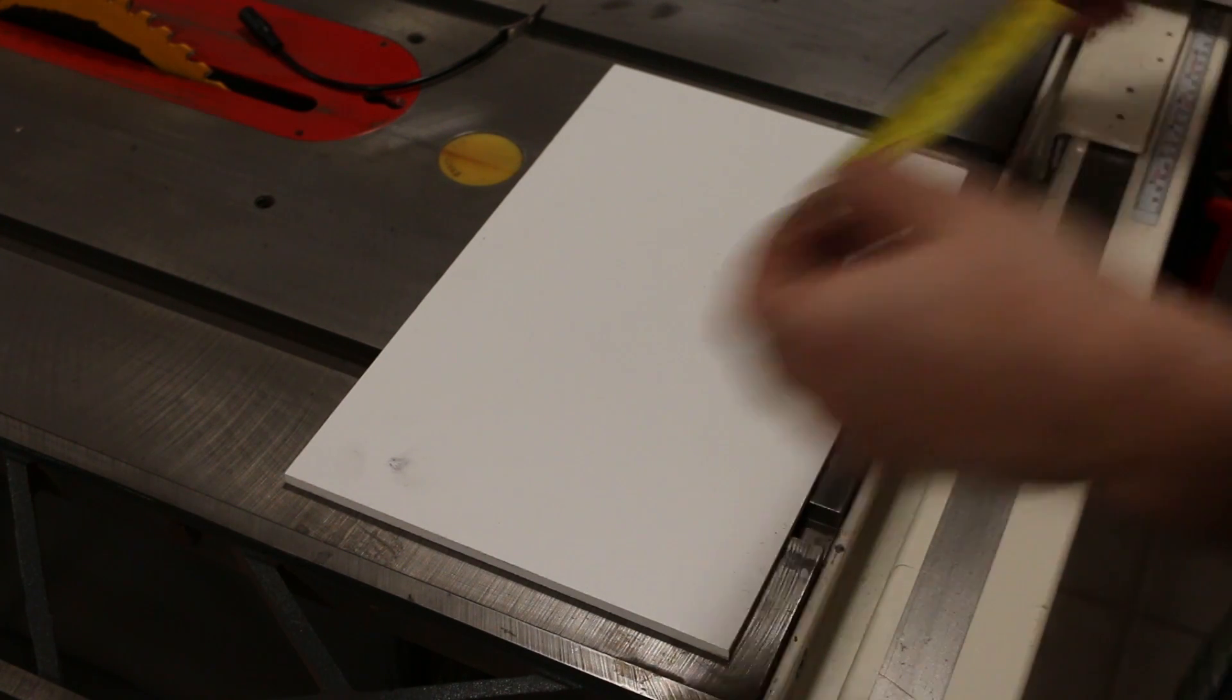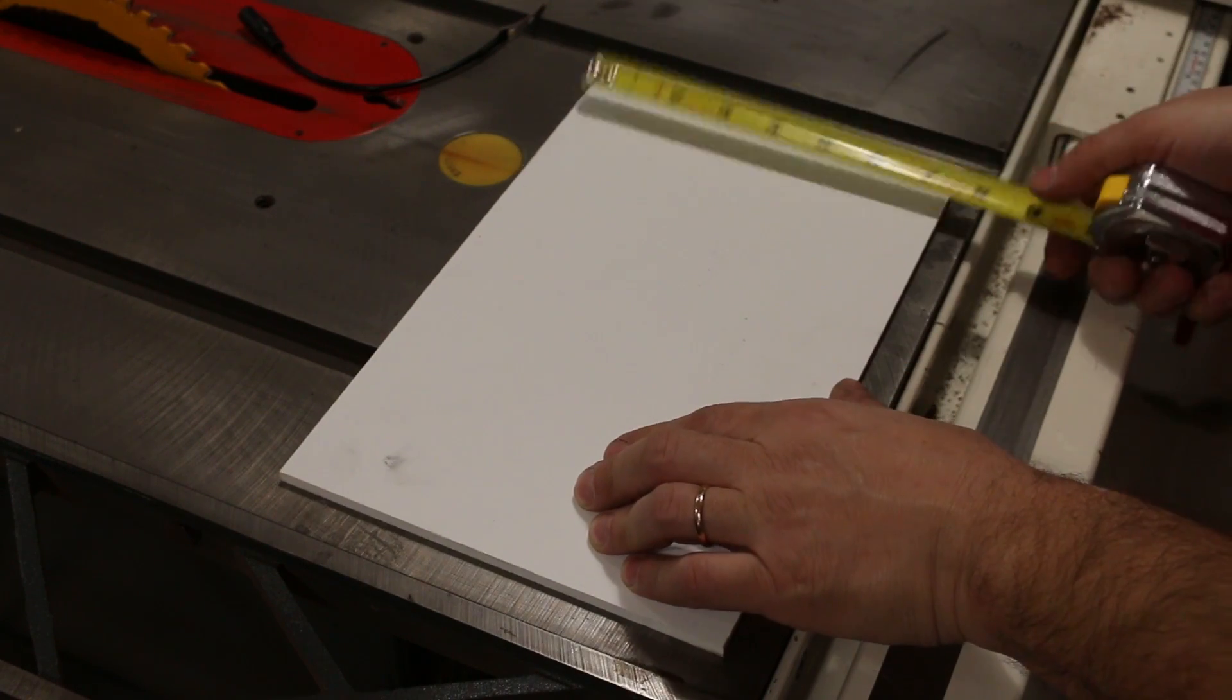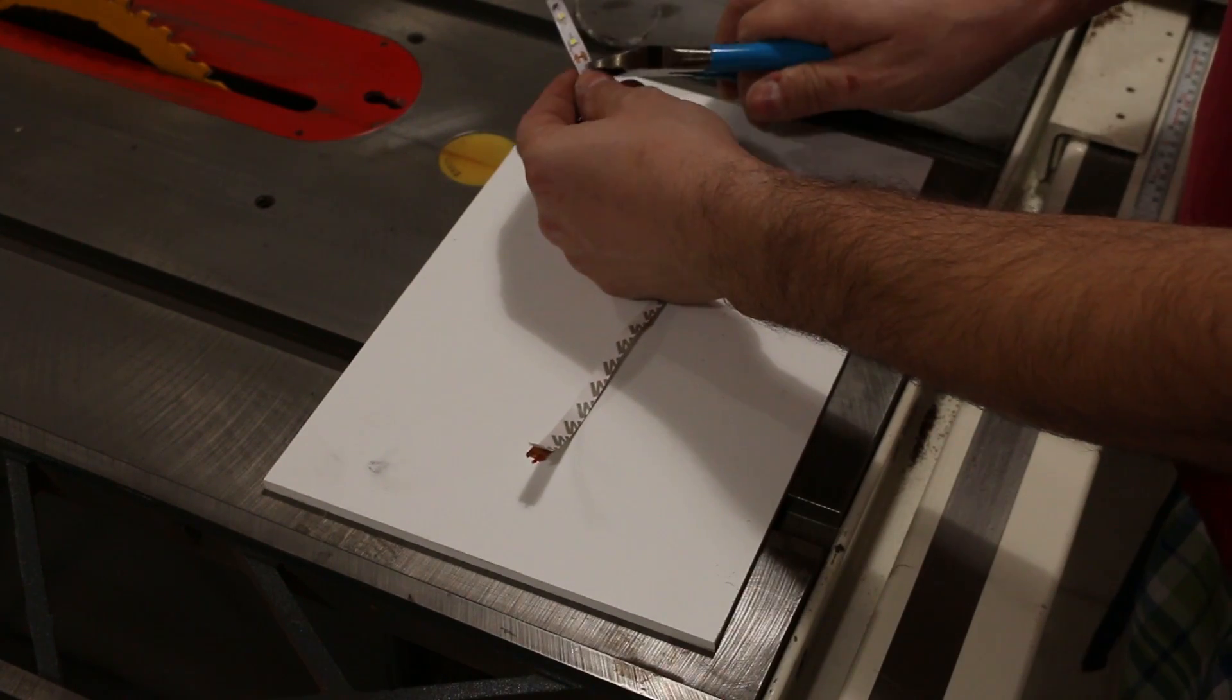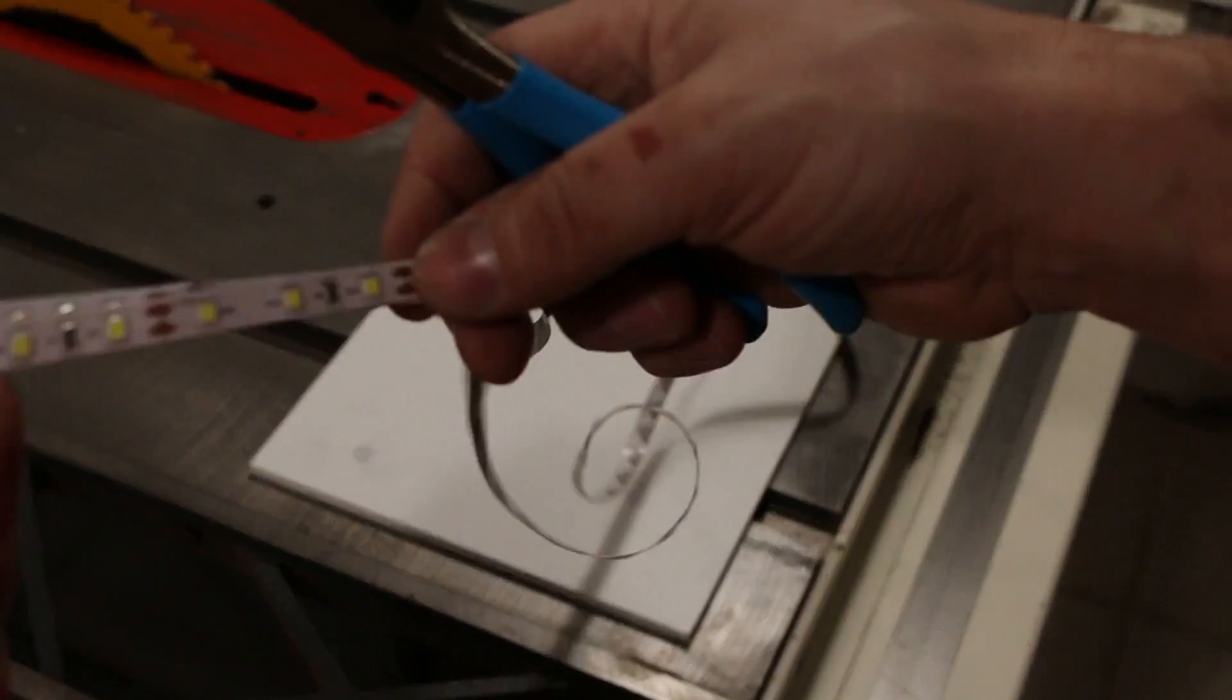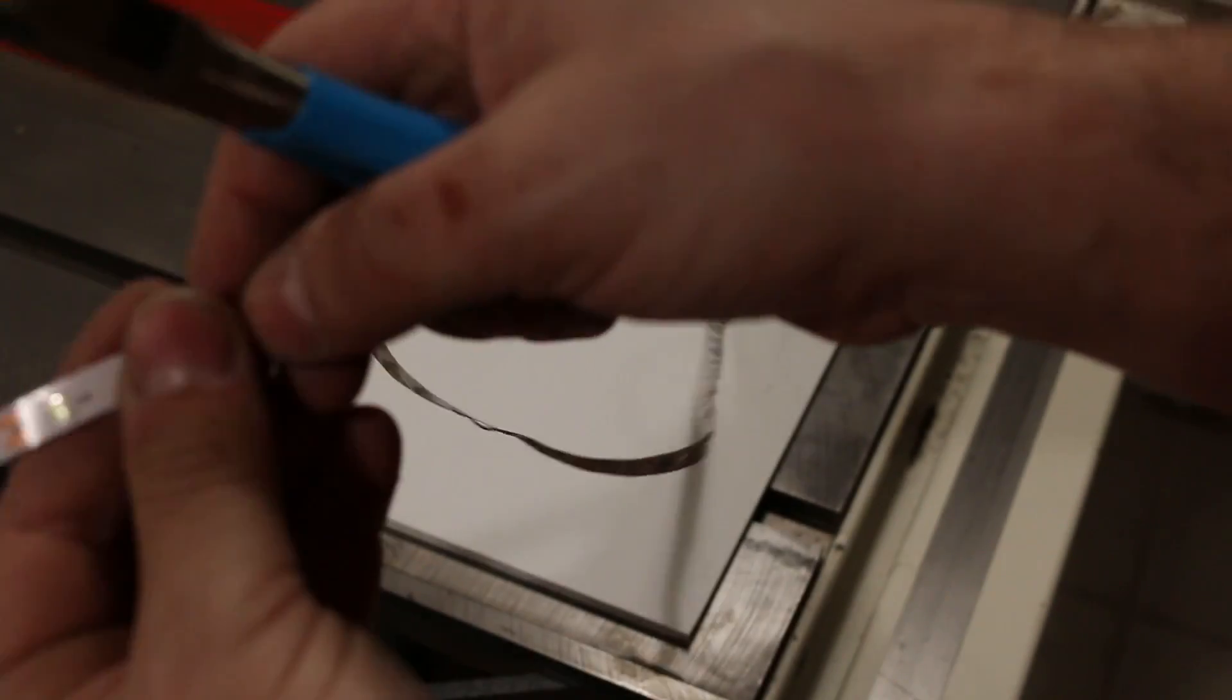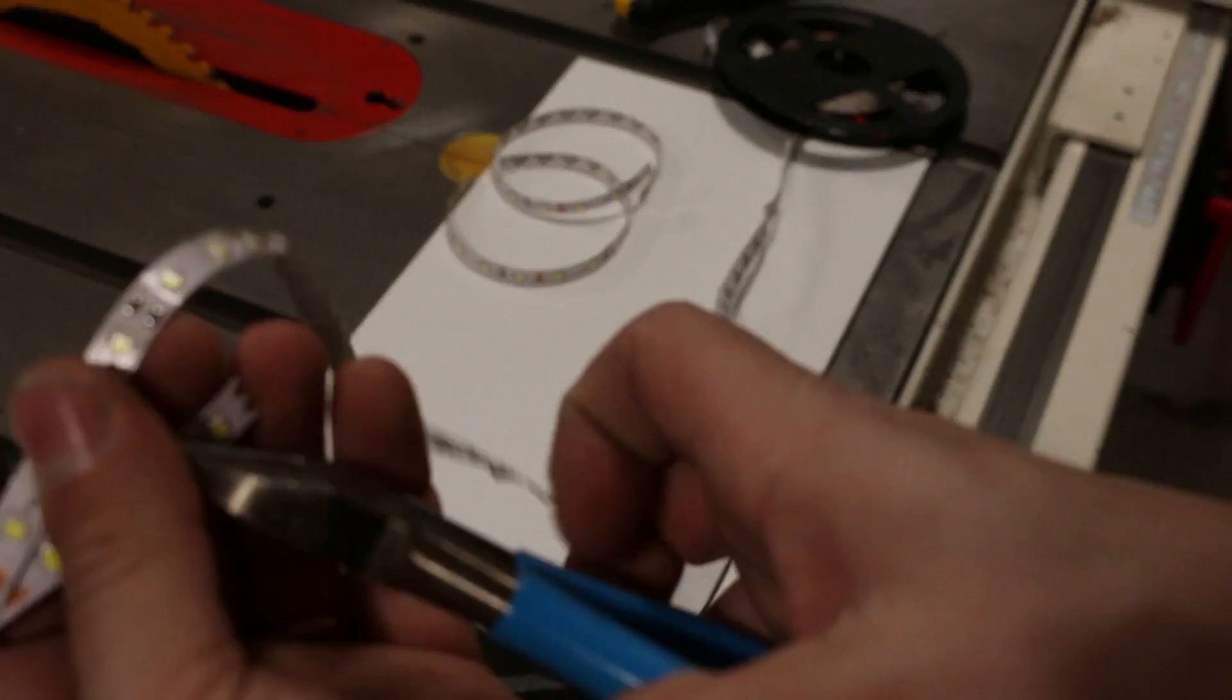I start the build by grabbing a board that is 7 by 12 inches. Here I'm cutting the LED strips into size, making sure I'm cutting at the connection points.